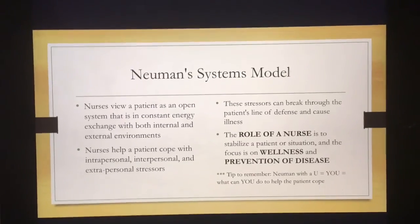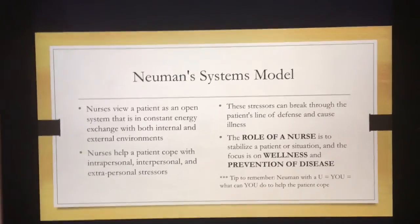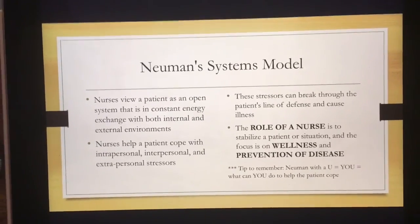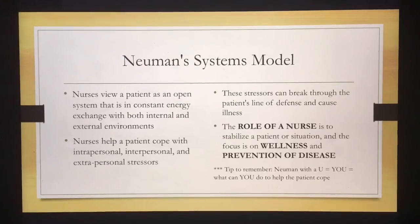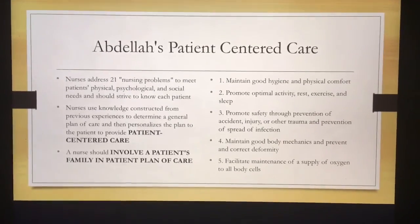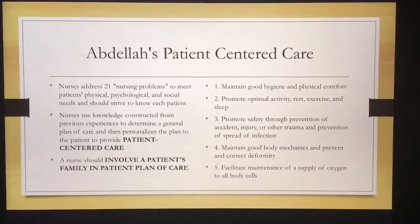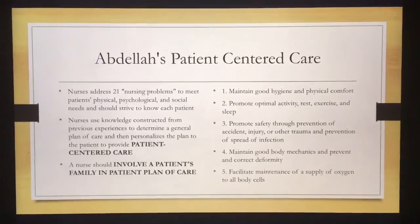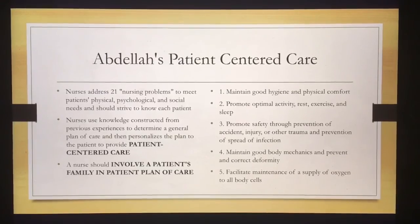Then we have Newman's Systems Model. With Newman's Systems Model, we view the patient as an open system that's constantly exchanging with their environment and their internal self. Our role as nurses is to help them cope with stressors that come from within, from their interpersonal relationships, and things that come from the environment. Abdellah's Patient-Centered Care is pretty self-explanatory. Every patient should have individualized care based on a general plan that we utilize. We should involve the patient's family in their plan of care, or whoever they designate as family. There are 21 nursing problems that Abdellah felt we needed to address to meet the patient's physical, psychological, and social needs.